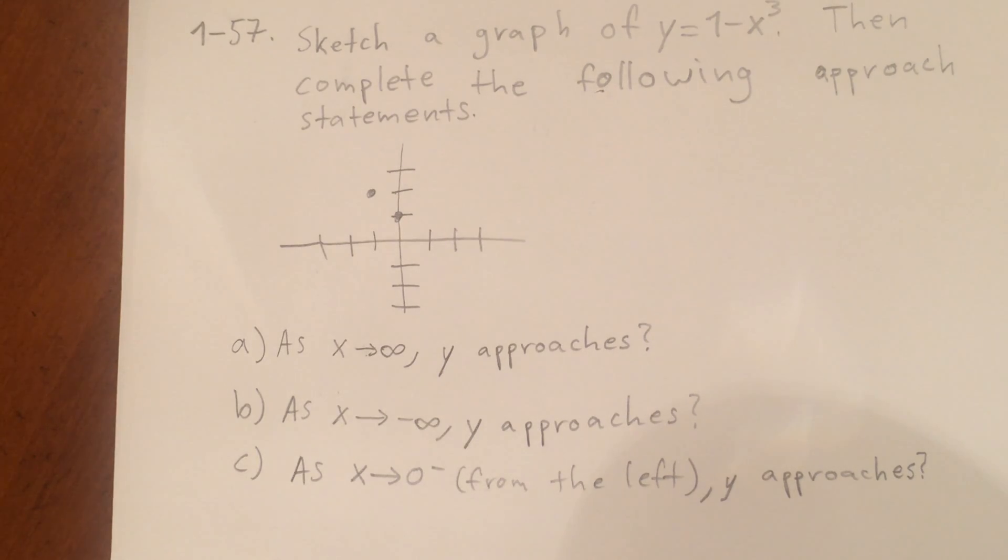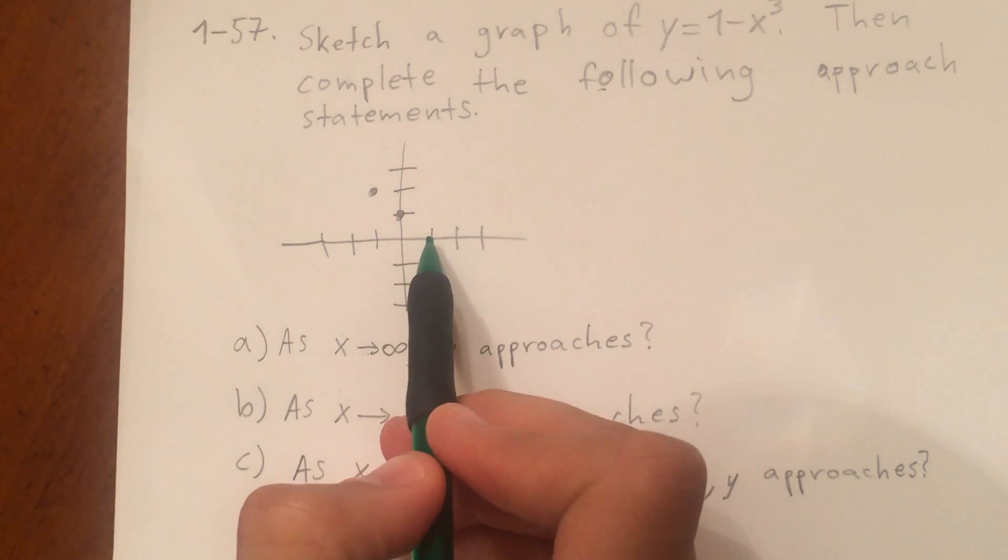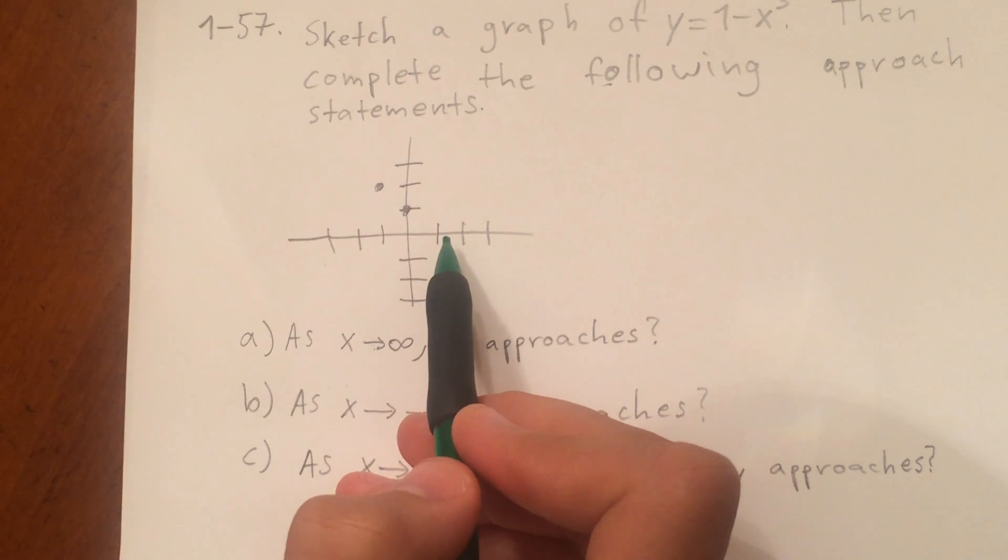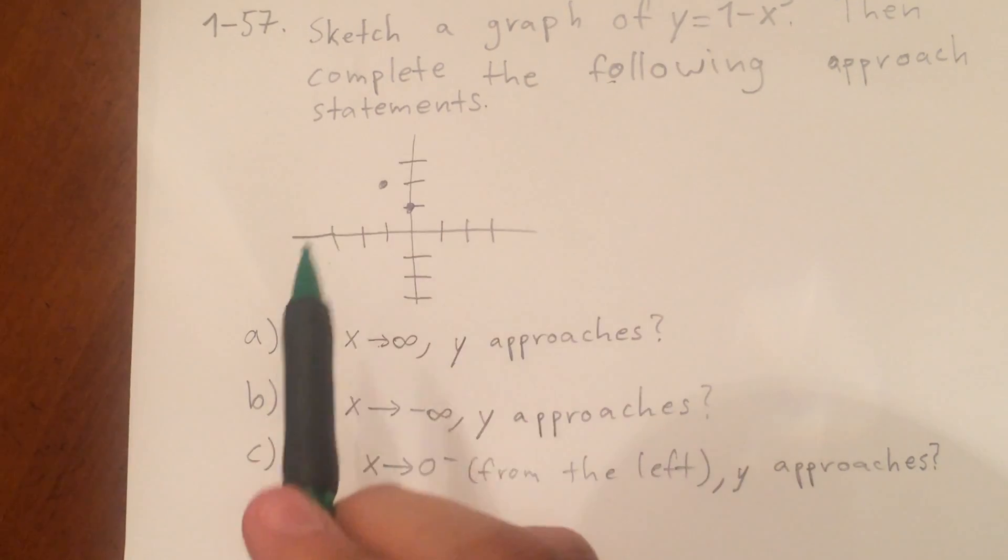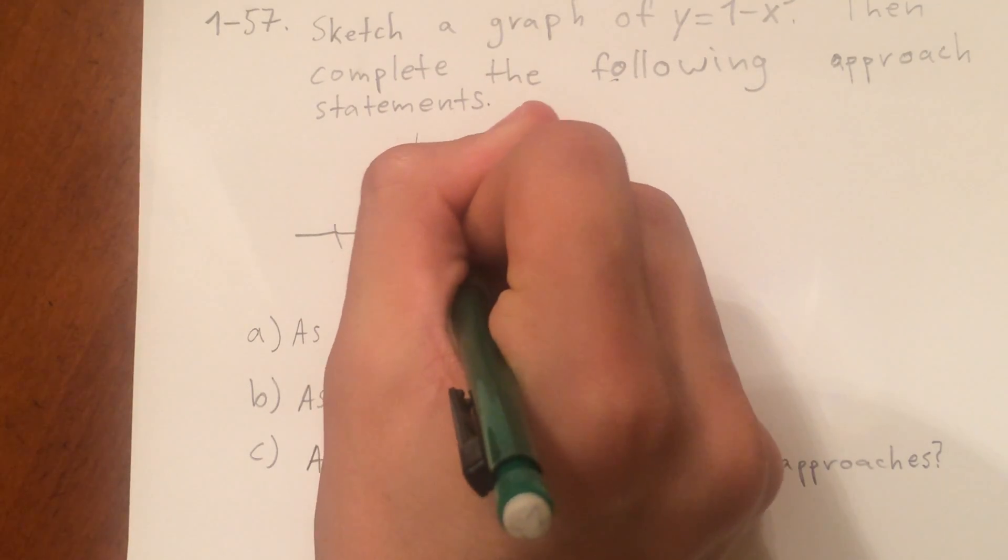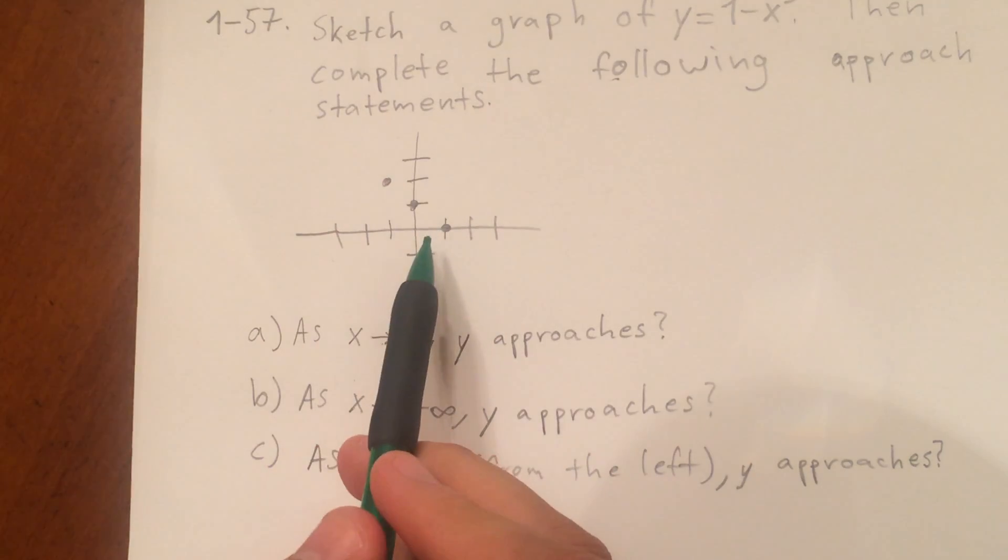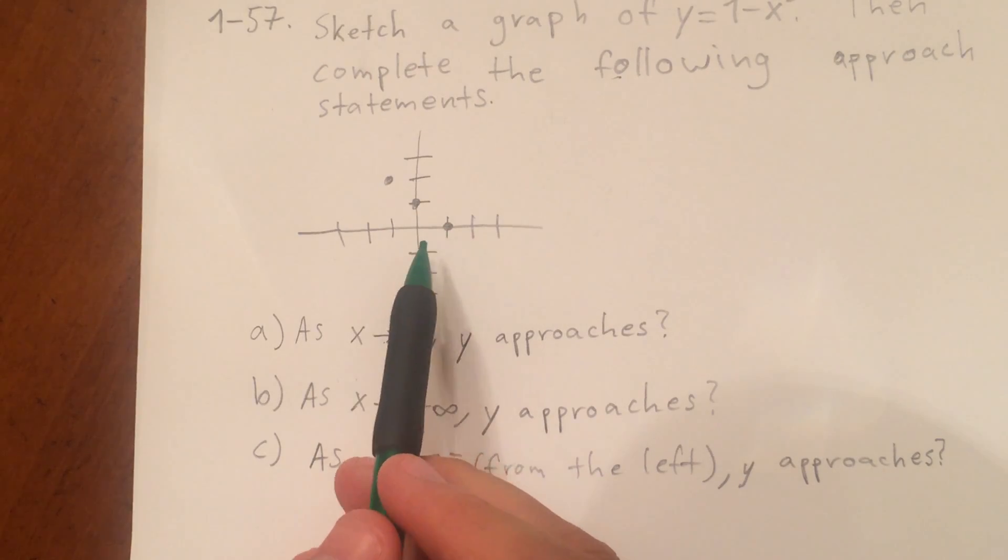And then when you plug in 1 for x, it's going to be 1 minus 1, which will give you 0. So the x coordinate 1 gives you the y coordinate 0.